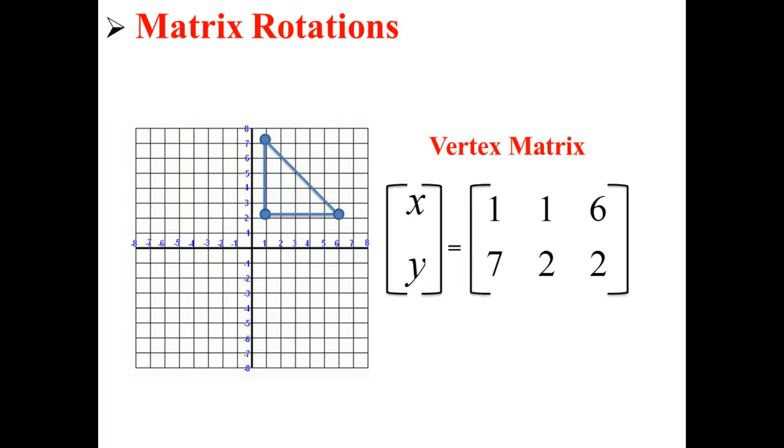We can organize these coordinates into a vertex matrix. Here the points (1,7), (1,2), and (6,2) are now displayed in a vertex matrix of x's and y's.